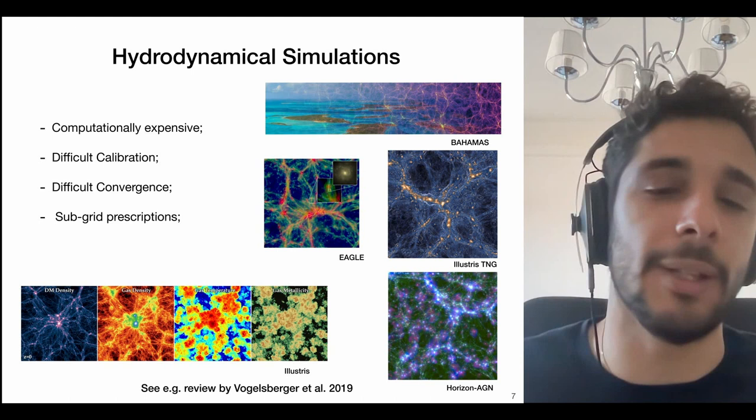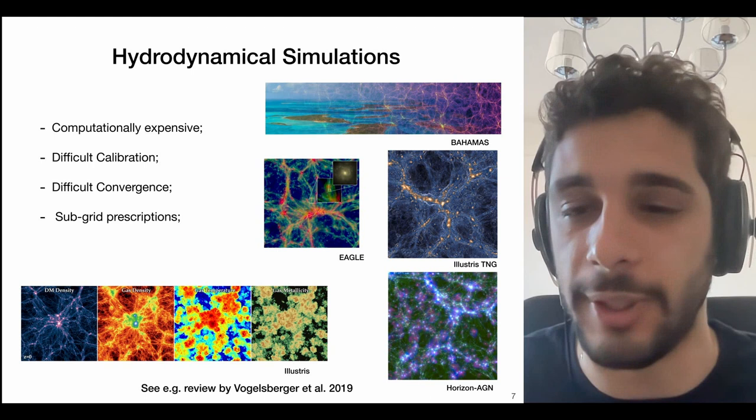What astronomical simulations implement are subgrid prescriptions — ad hoc numerical formulations placed by hand to model small-scale physics that is not accurately resolved. These subgrid prescriptions must be calibrated and tested against observations. So while these simulations are the most complex modeling available for both dark matter and baryons, baryonic effects are still quite poorly understood and must be taken with a pinch of salt.